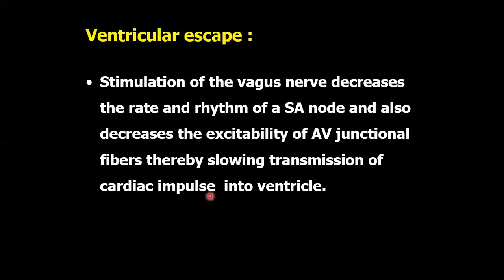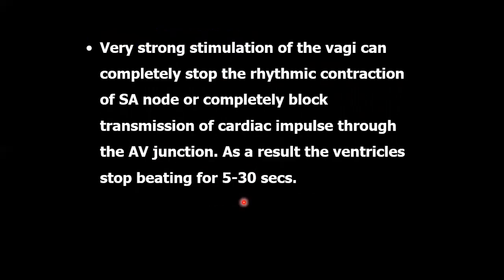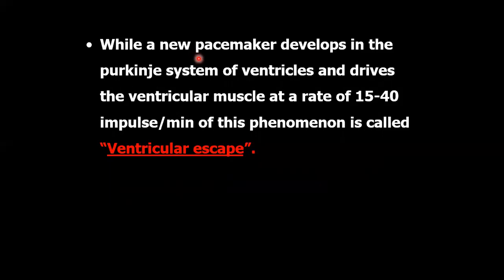Ventricular escape: stimulation of the vagus nerve decreases the rate and rhythm of the sinus node and also decreases the excitability of AV junctional fibers, thereby slowing transmission of cardiac impulse into the ventricle. Very strong stimulation of the vagus can completely stop the rhythmic contraction of the sinus node or completely block transmission of cardiac impulse through the AV junction. As a result, the ventricles stop beating for 5 to 30 seconds, while a new pacemaker develops in the Purkinje system of the ventricles and drives the ventricular muscle at a rate of 15 to 40 impulses per minute. This phenomenon is called ventricular escape. Thank you.